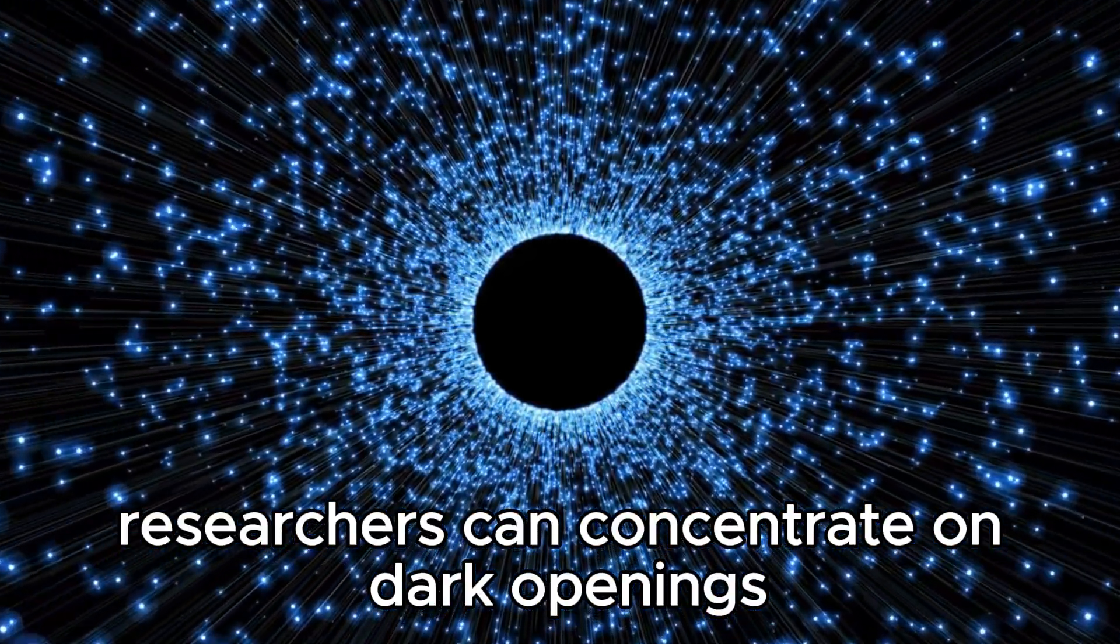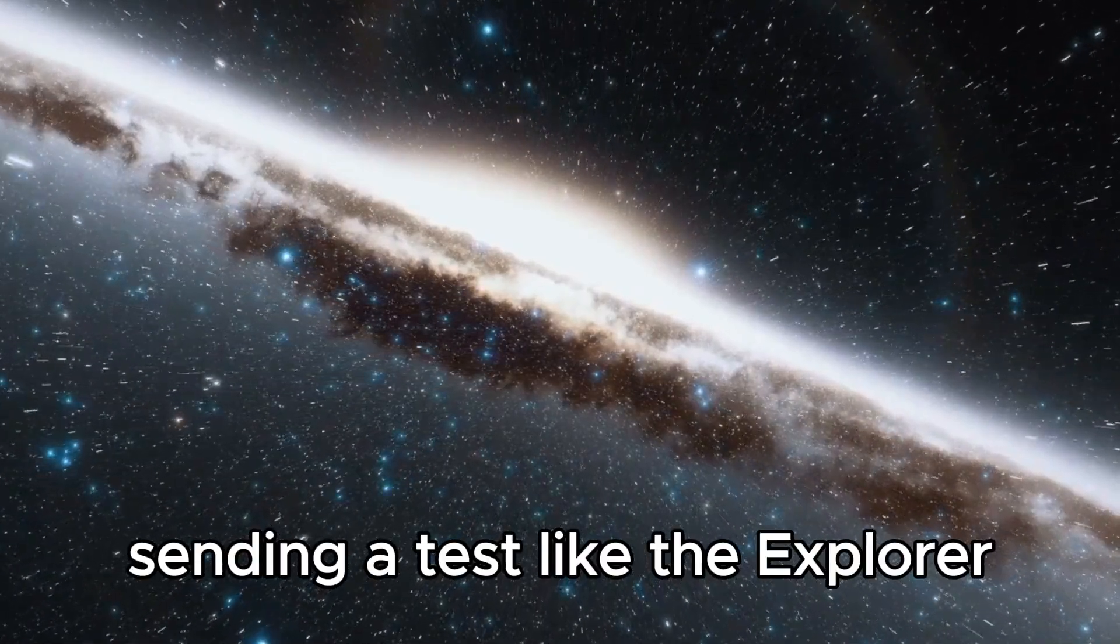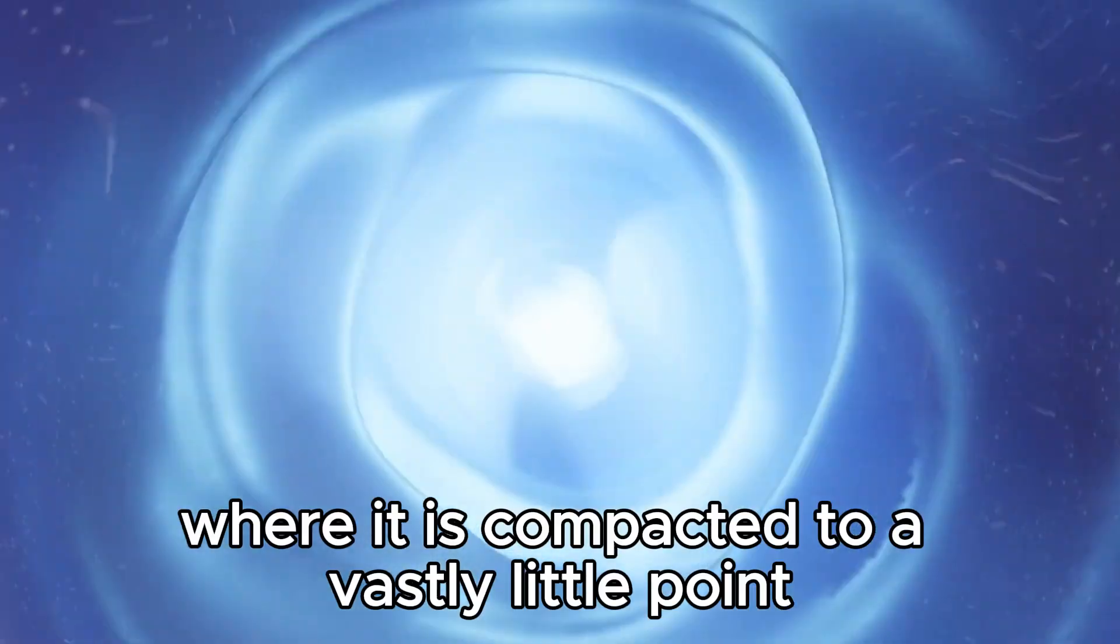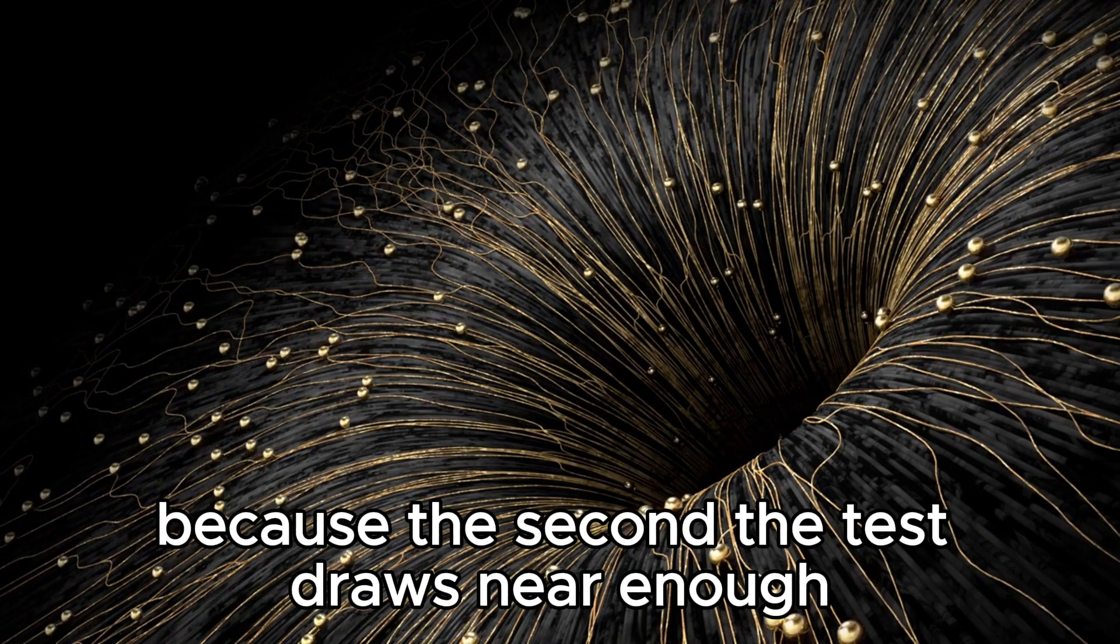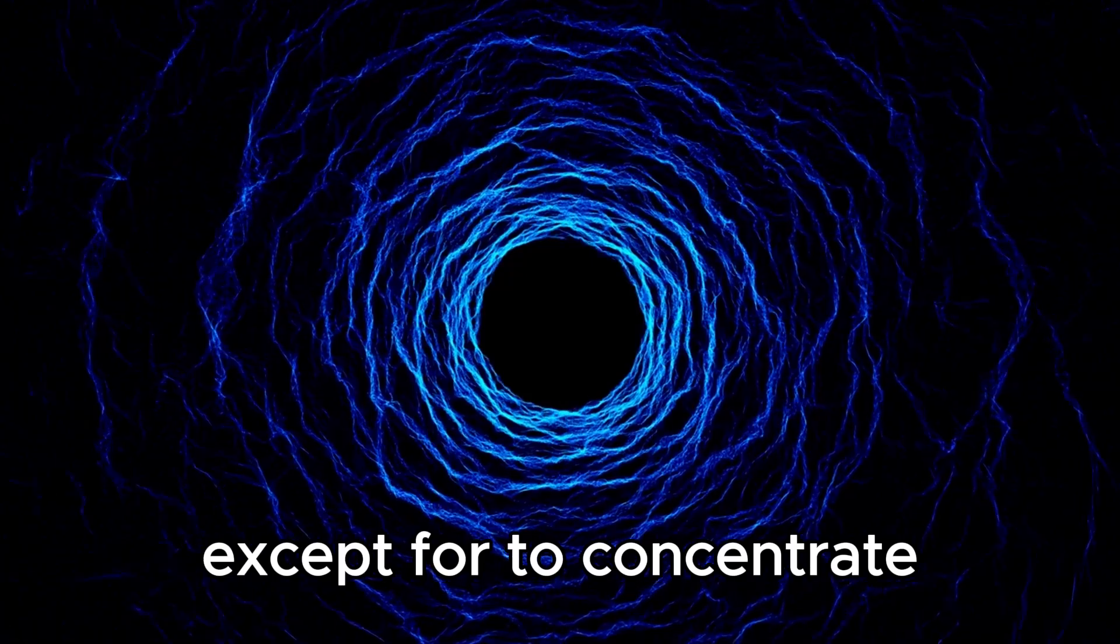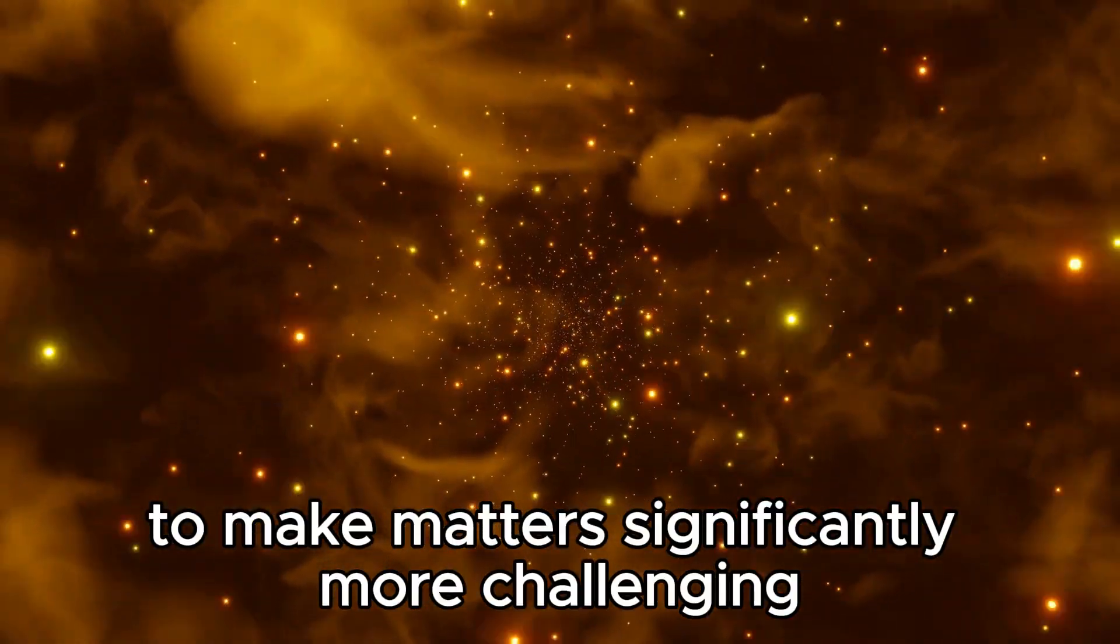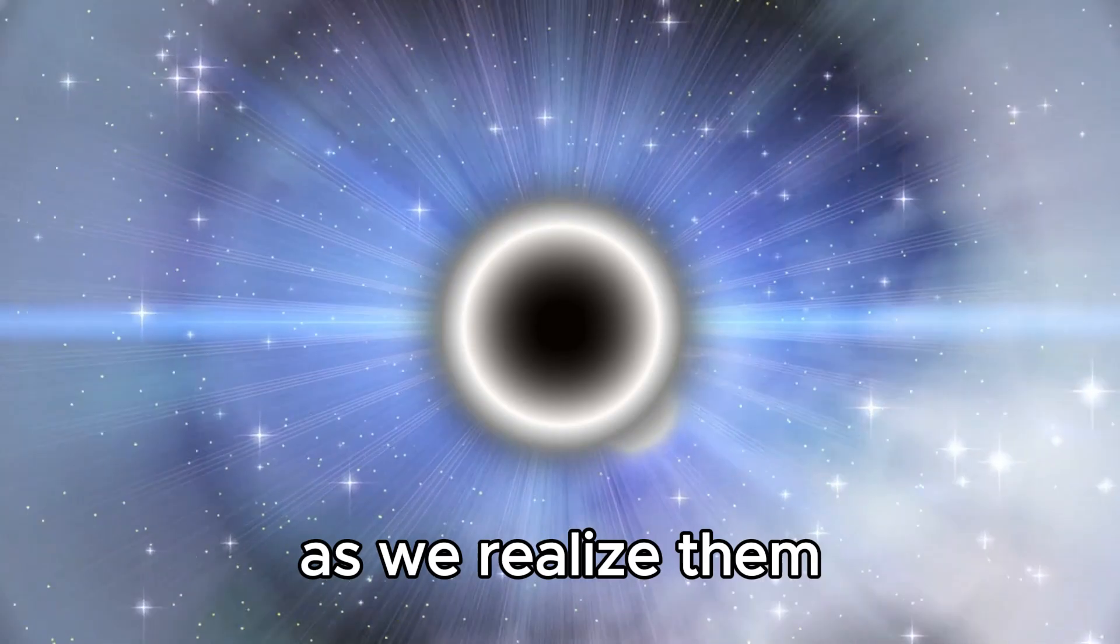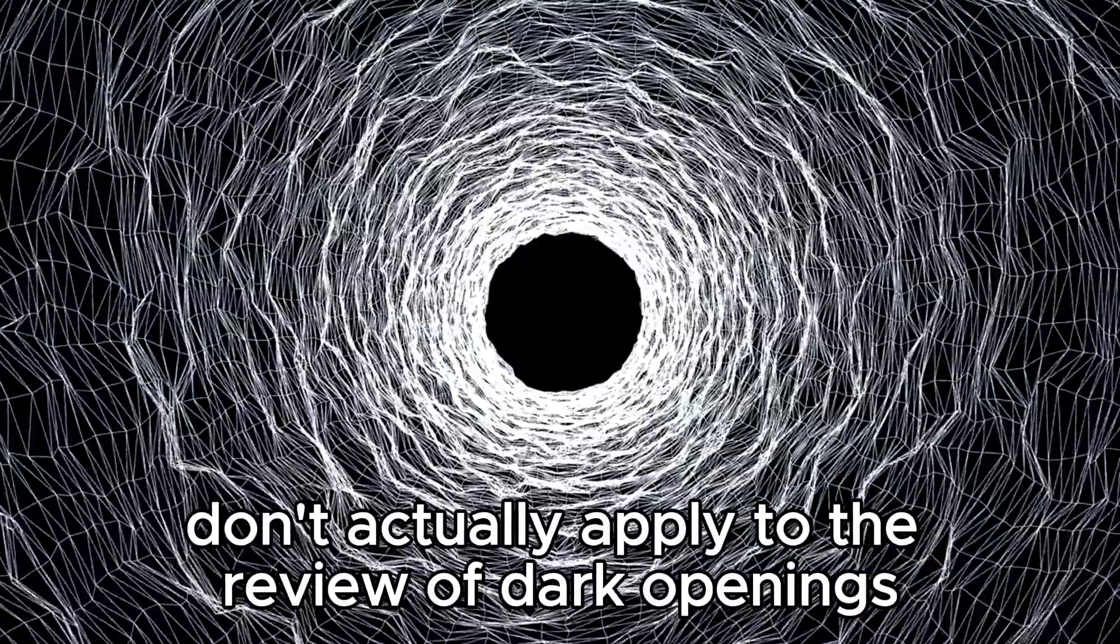Researchers can concentrate on black holes indirectly by noticing the radiation they transmit and the gas and residue that surrounds them. Sending a probe like the Voyager inside a black hole isn't conceivable because anything that enters the event horizon is pulled towards the singularity where it is compacted to an infinitely small point. Because of this, researchers are left with no option except to concentrate on these objects in a two-dimensional way despite the fact that they are three-dimensional phenomena in reality.